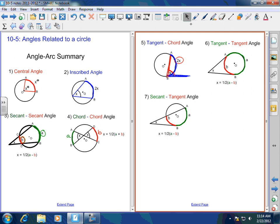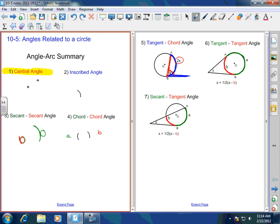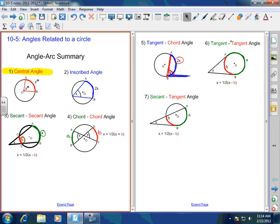So in essence, you really only have three formulas to memorize. Central angle, let's go ahead and highlight these. Central angle, you have the angle is equal to the arc measure.